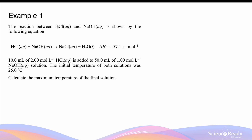Example 1: the reaction between hydrochloric acid and sodium hydroxide is shown by the following equation, and we are also given the enthalpy change of this neutralization: minus 57.1 kJ per mole. This number means that every time one mole of water is formed between the reaction of hydrochloric acid and sodium hydroxide, it releases exactly 57.1 kJ of energy.